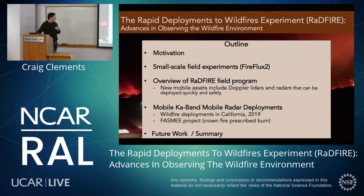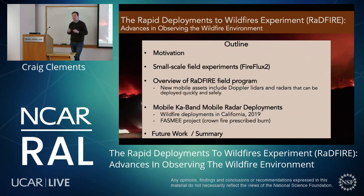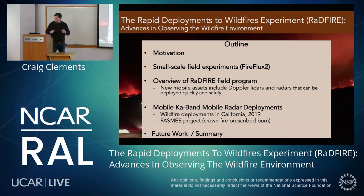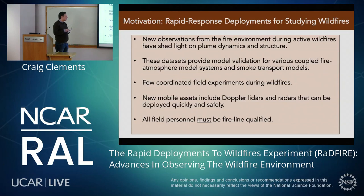We'll lead into observations from our new mobile Ka-band dual-pol Doppler radar. We had four deployments this year. One was the FASME project — the Fire and Smoke Modeling Evaluation Experiment — where we had the opportunity to go to a prescribed crown fire in Utah to test the radar. Then some future work and summary. So: motivation. Rapid response deployments for studying wildfires.